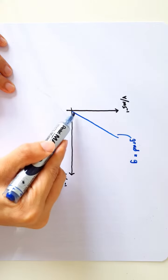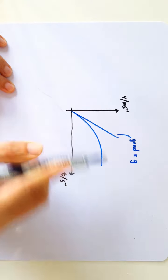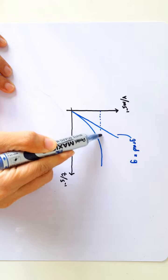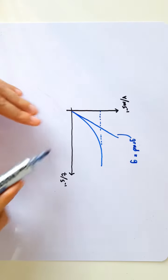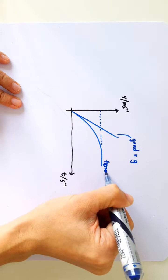But if there's air resistance, the graph will not be a straight line but instead looks something like this. As the air resistance increases, the acceleration decreases, and eventually it reaches terminal velocity.